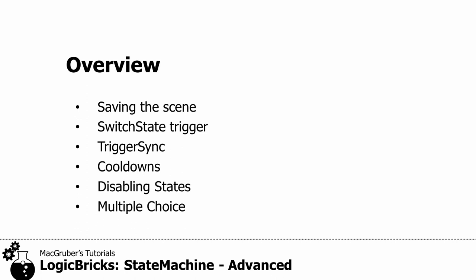As an overview, I'm going to talk about things that relate to saving the scene when you have a state machine. Then the switch state trigger, which allows you to explicitly switch to a particular state via trigger. Then there's trigger sync, which helps synchronize multiple state machines or animations with your state machine. Then there's a cooldown feature that allows you to temporarily remove a particular state from the state machine so it can't be chosen again. The disabling states goes in a similar direction, and last but not least, the multiple choice system that allows you to react to user inputs and switch to different states.